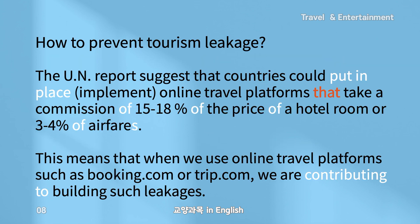How to prevent tourism leakage? The UN report suggests that countries could put in place online travel platforms that take a commission of 15 to 18% of the price of a hotel room or 3 to 4% of airfares. This means that when we use online travel platforms such as Booking.com or Trip.com, we are contributing to building such leakages.